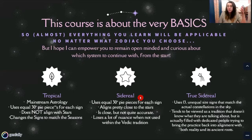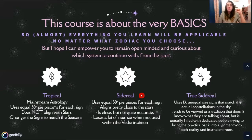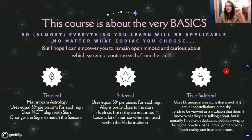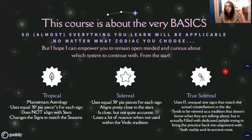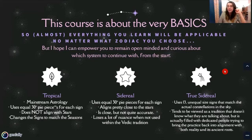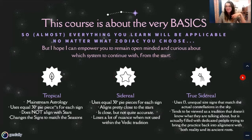Then we have sidereal — it uses equal 30-degree pie pieces for each sign, aligns pretty close to the stars, but is not quite accurate, and loses a lot of nuance when not used within the Vedic tradition. Then we have true sidereal, which uses 13 unequal-sized signs that match the actual constellations in the sky. It tends to be viewed as a tradition that doesn't know what it's talking about, but it's actually filled with dedicated people trying to bring the practice back into alignment with both reality and its ancient roots. In this course, I'm going to teach you how to run all three types of charts — I'll see you in the next video.